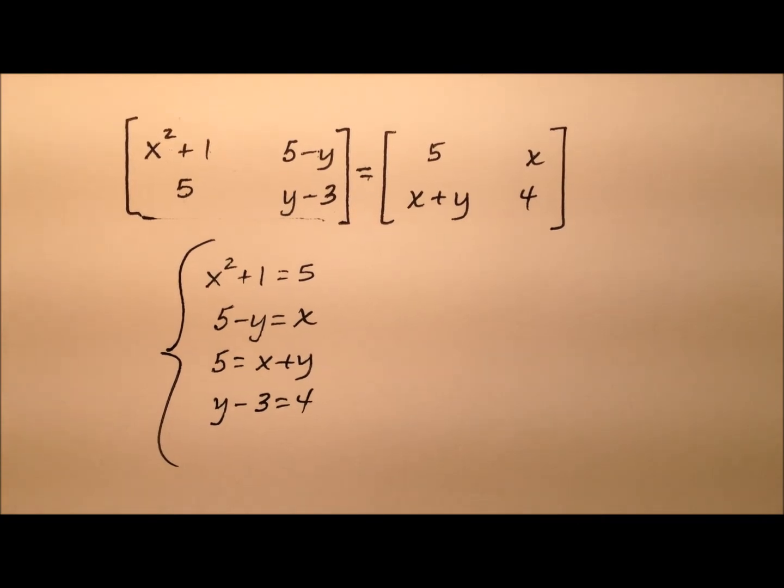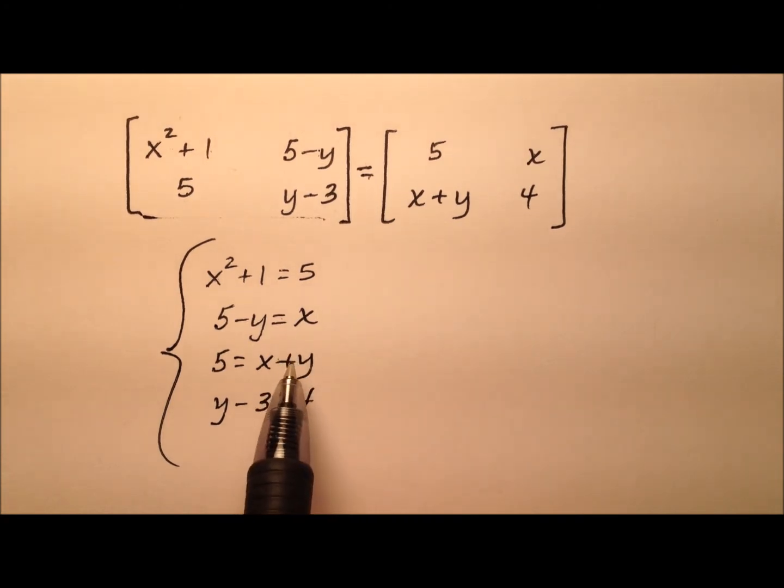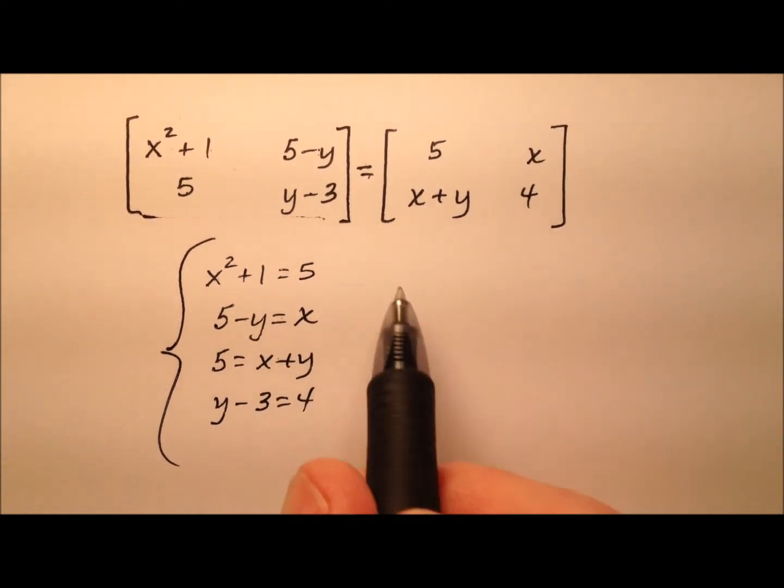So I have here a nice system of equations. Looks like four equations but only two unknown values, so it should be pretty easy. It means I have some excess equations, and that's okay.